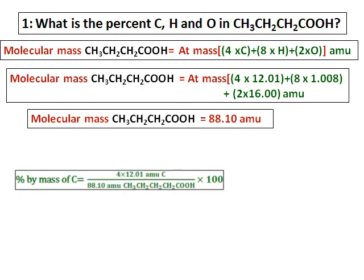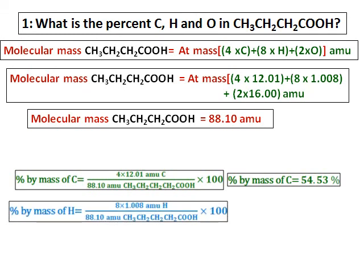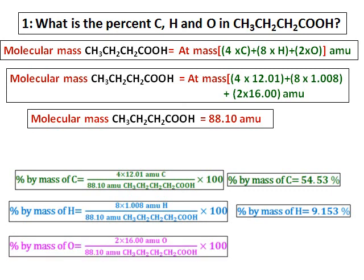This compound is butanoic acid and the molecular mass comes to 88.10. Now we have to calculate the percent by mass of carbon. The number of carbon atoms in this compound is 1, 2, 3, 4 — so it will be 4 times 12.01, divided by the molecular mass, times one hundred.